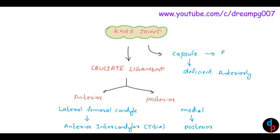The capsule of the knee joint between the meniscus and the tibia thickens and supports the knee joint. This portion of the capsule is called the coronary ligament. The cruciate ligament is supplied by the middle genicular vessels.